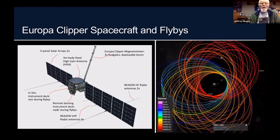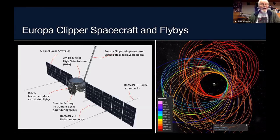Europa Clipper will not actually orbit Europa itself but will orbit Jupiter — similar to how Juno does — while making many dozens of close flybys of Europa. It will do some flybys of other Galilean satellites, mostly to change the orbit using Ganymede and Callisto as gravity-assist objects. The principal target is, by definition, Europa.